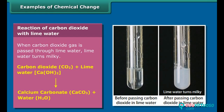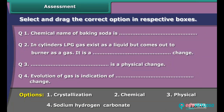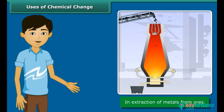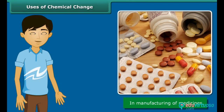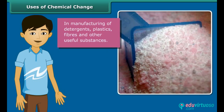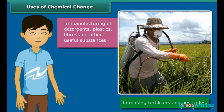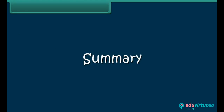The carbon dioxide formed in the above experiment is passed through lime water — the lime water turns milky. Students, do you know the importance of chemical changes in our life? This is useful in extracting metals from ores, manufacturing medicines, and producing artificial and useful substances like detergents, plastics, fibers, fertilizers, and pesticides for agriculture.